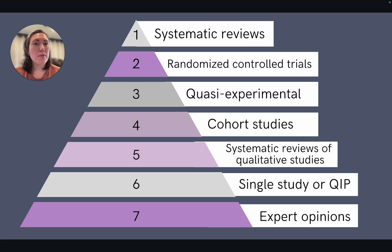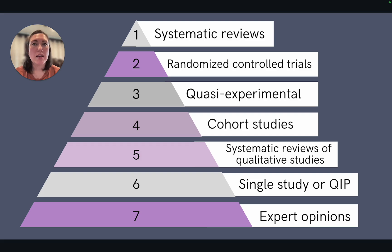Starting from the bottom, an example of level seven evidence is the opinions of expert authorities or committees. This is considered at a lower level due to the potential for bias in the report. Level six evidence is from a single study or from an evidence-based practice project or quality improvement project.